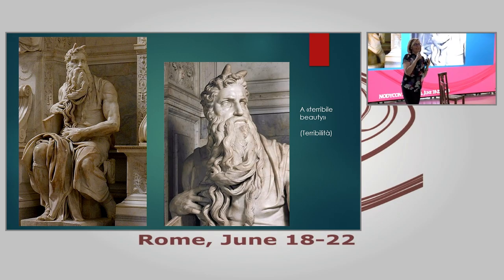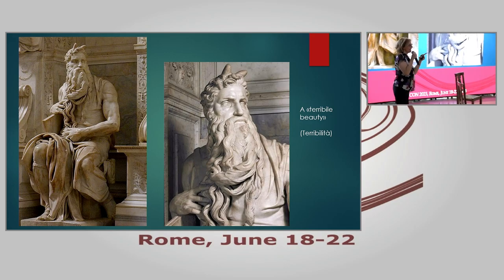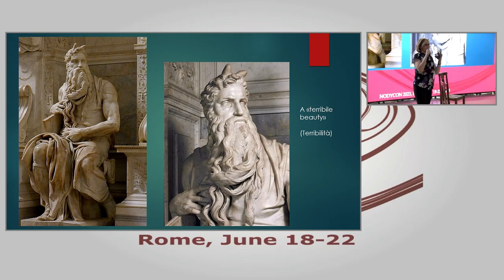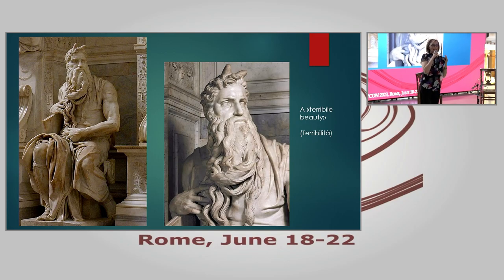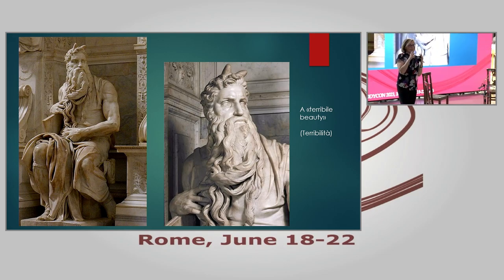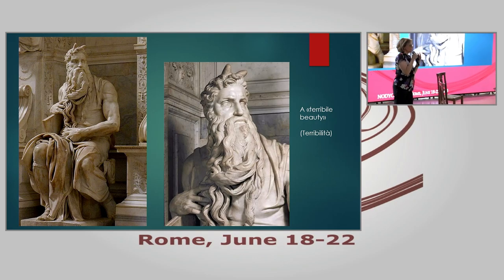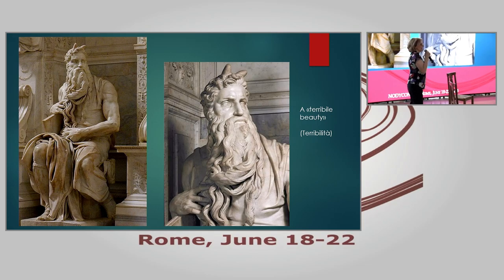Certainly the Moses, like the David, inspires this idea of a terrible beauty. Look at the gaze of this man — look at the power of his body. He is seated. He is the great leader of the Jews, the biblical hero who led the Jews to freedom. He was the man who had the opportunity to talk to God, who received the tables of the laws — the laws of the covenant — from God's hands, and had the word of God himself. So he really is a terrible man in the sense of being incredibly powerful, quite supernatural.